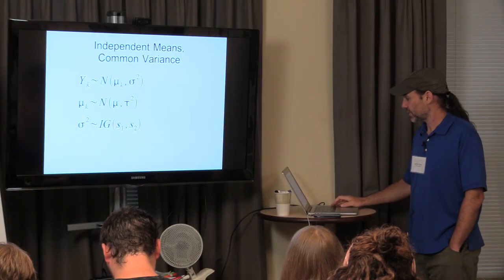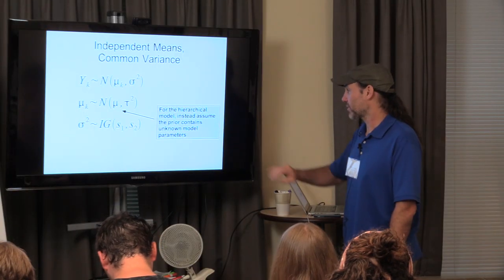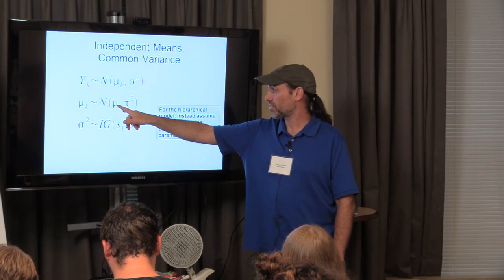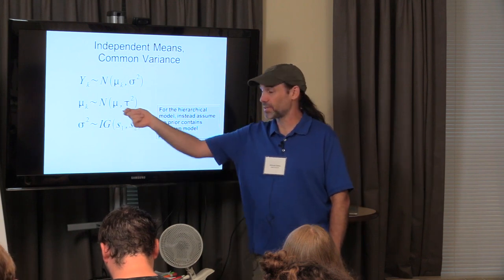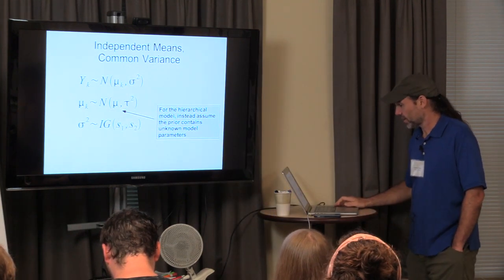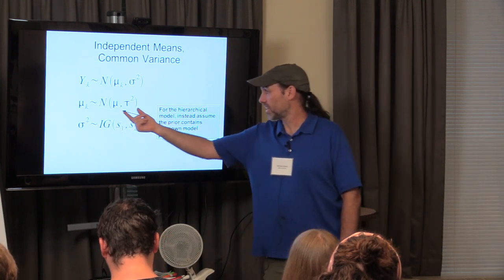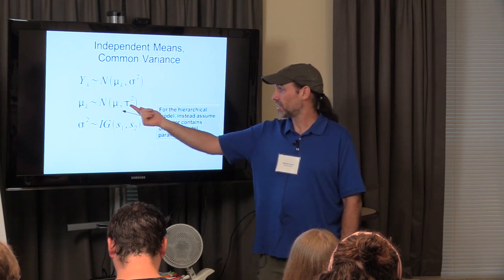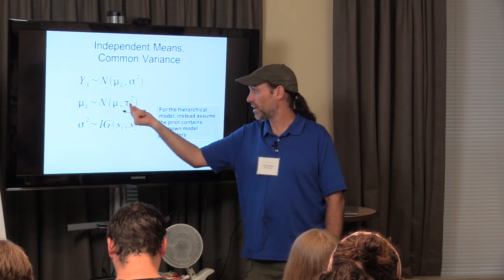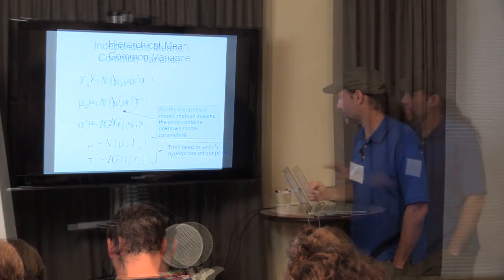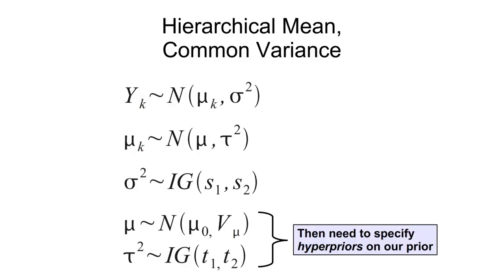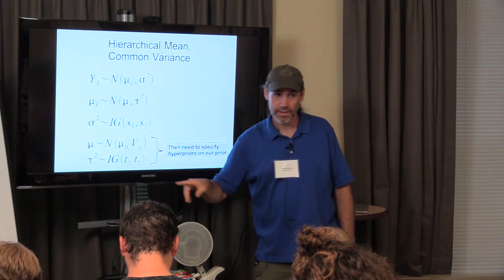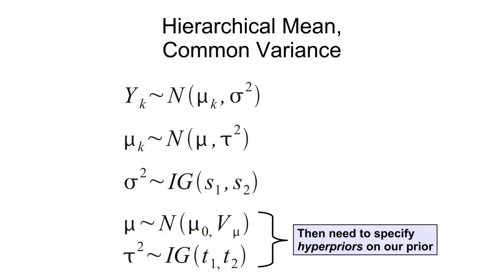To extend this to a hierarchical model, we assume the prior contains unknown model parameters. Instead of plugging in specific numbers, we want the prior mean and variance to be unknowns fit from the data. Once those become unknowns, we need priors on them — the tau becomes the cross-site variance. In Bayesian inference, everything that's unknown needs a prior. Once we move to having the cross-site mean and variance as unknowns, we need to put priors on them.